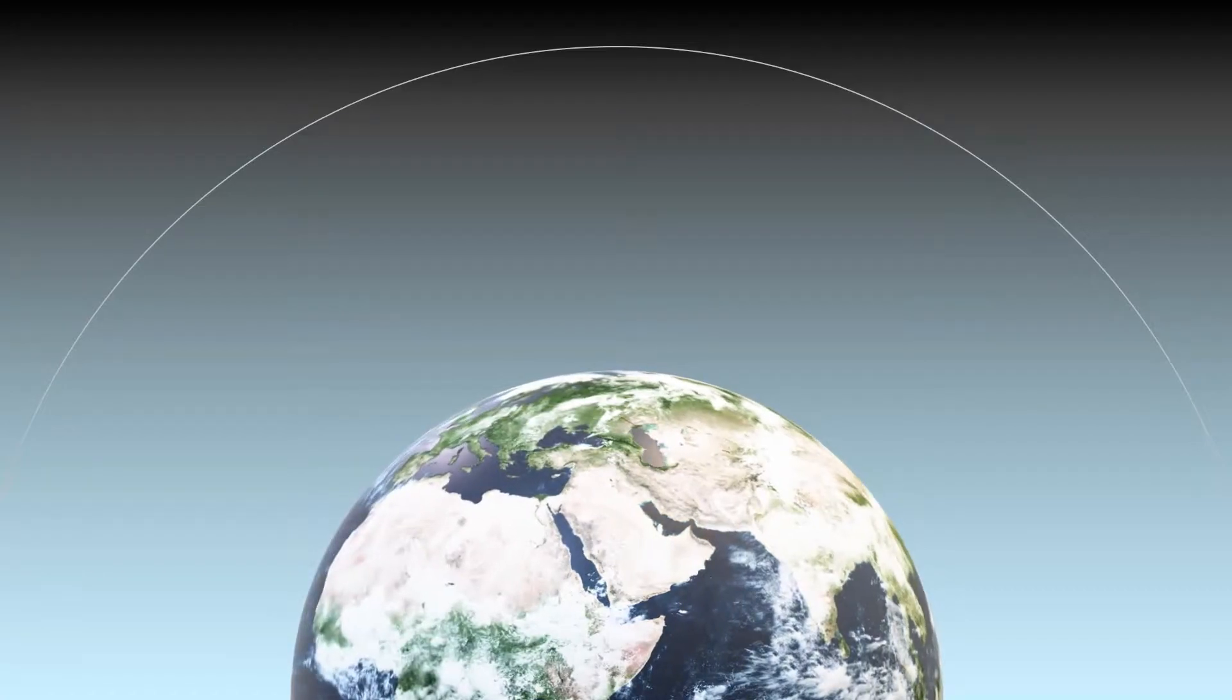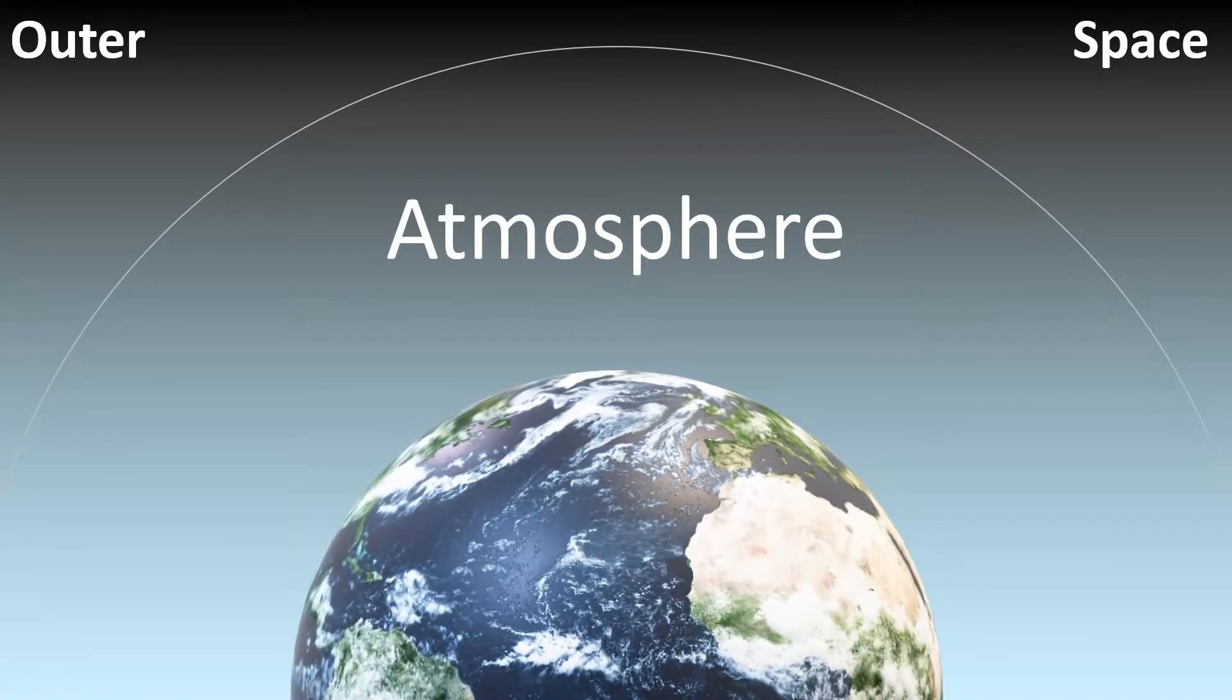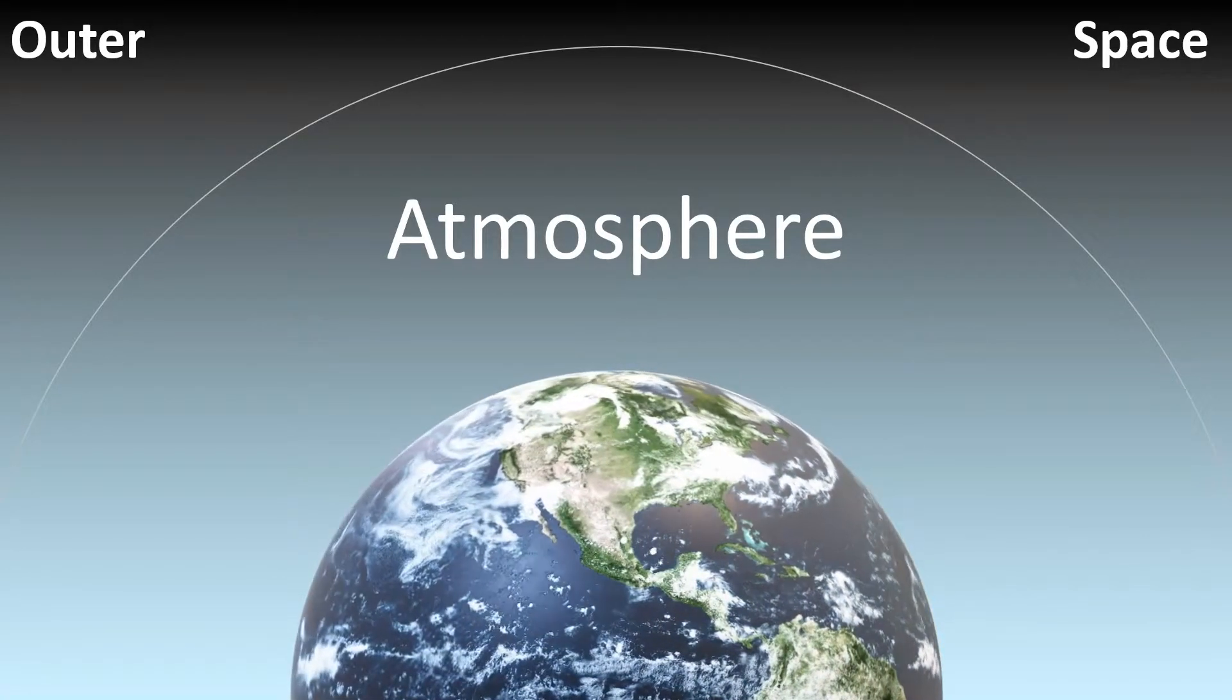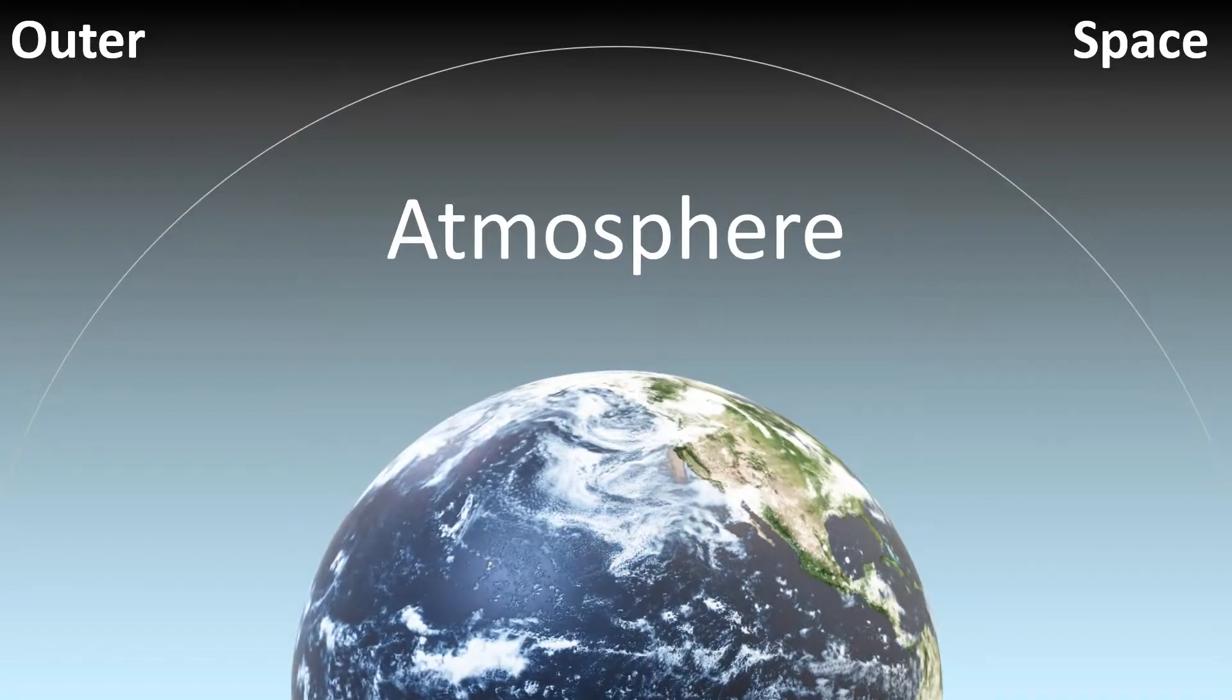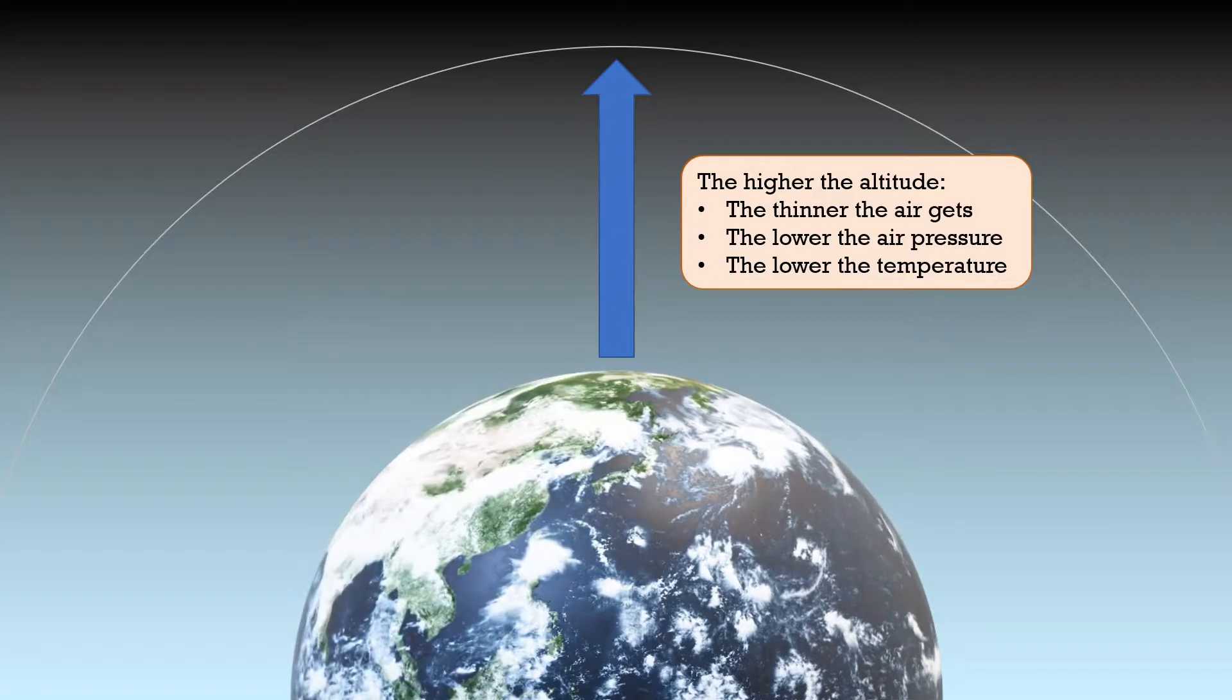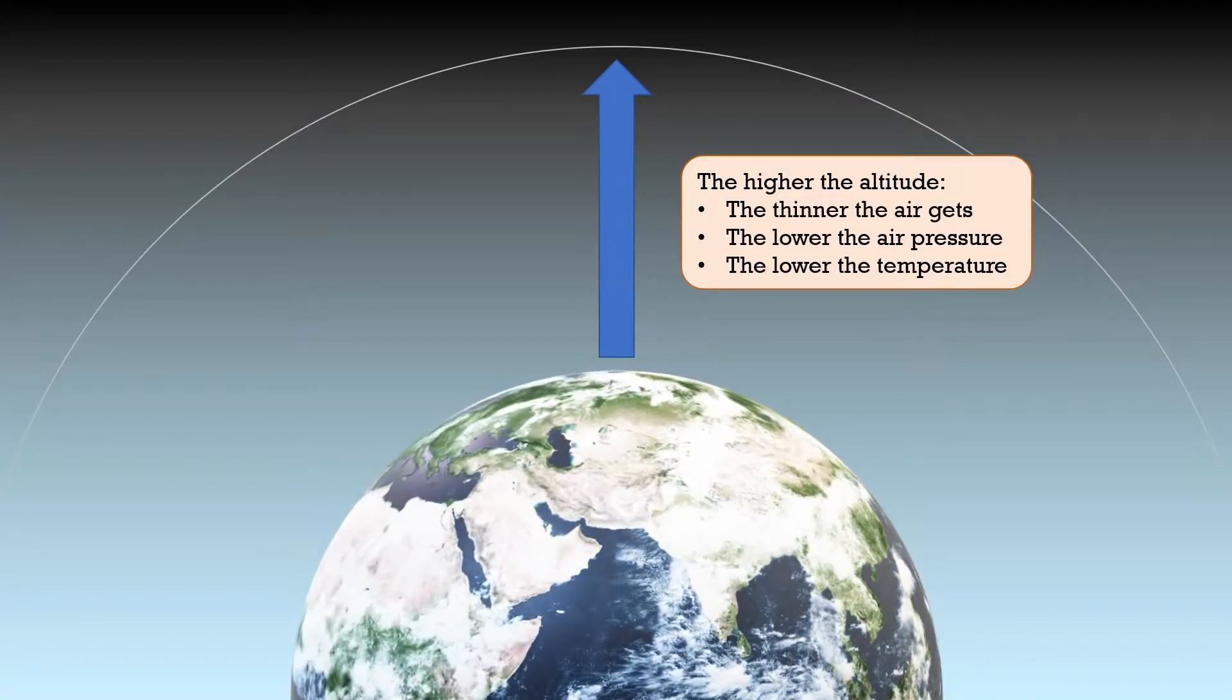Now let us take a look at the atmosphere. Our atmosphere is roughly 400 kilometers thick, and it is made out of layers and layers of gases that envelop the Earth and held together by gravity. As we move upwards in the atmosphere, the thinner the air gets, which lowers the air pressure. The temperature also decreases as we go up.